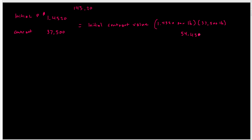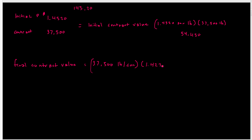Then they want to know the final contract value. We do the same thing — 37,500 pounds per contract times the final price. The problem tells us that coffee prices turn out to be $1.4273 per pound at expiration. So the final value is $53,523.75.